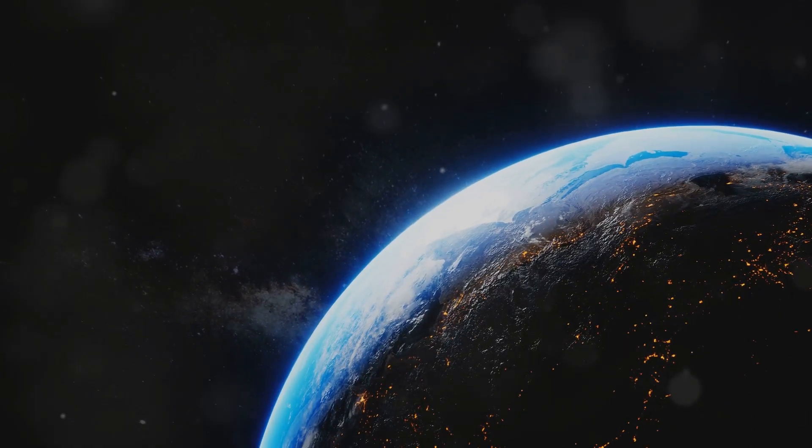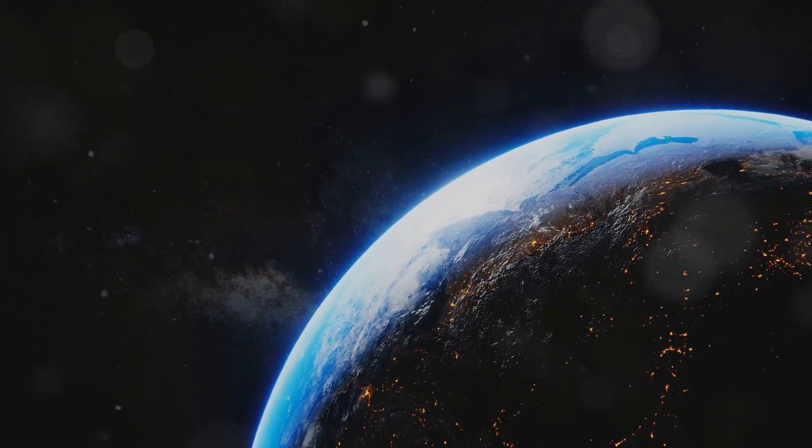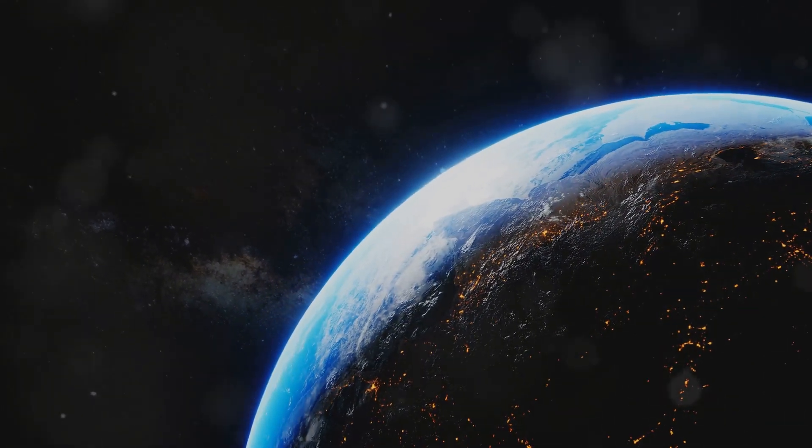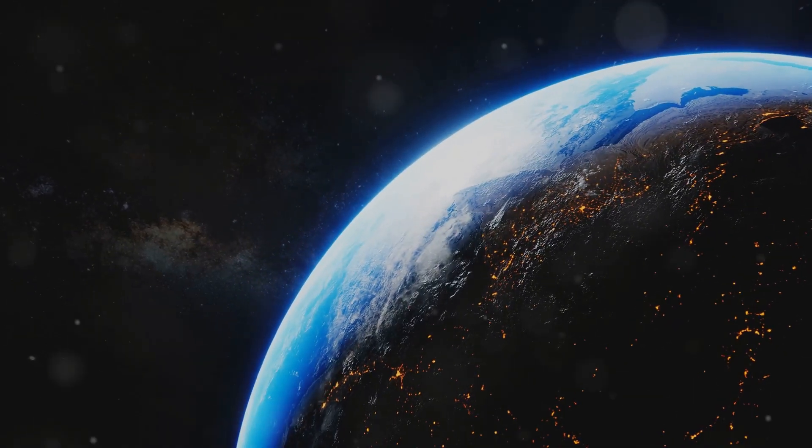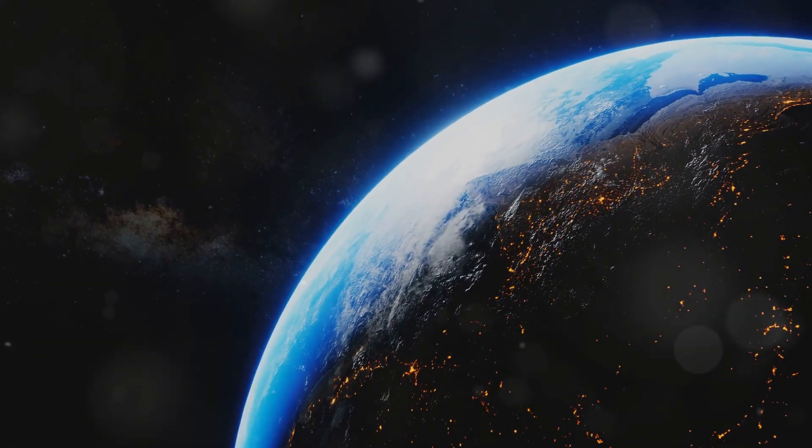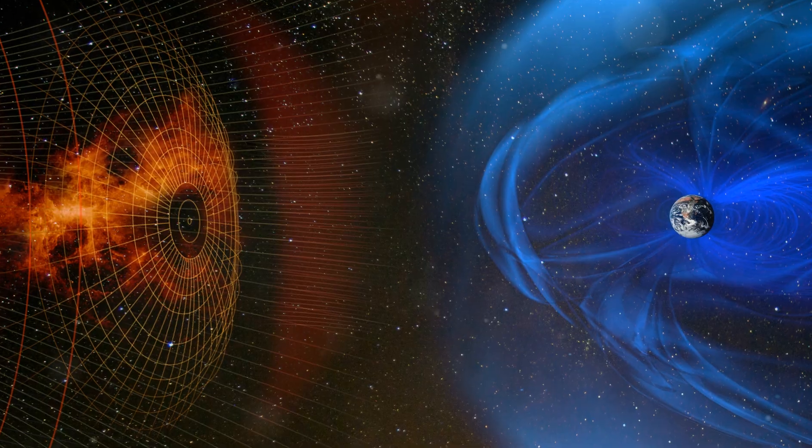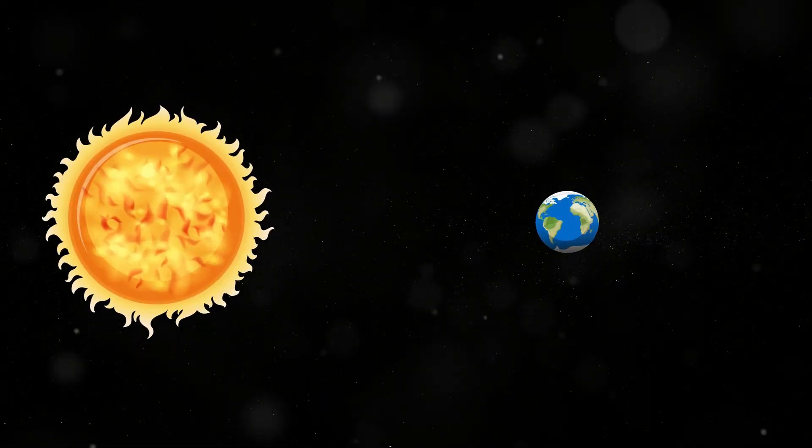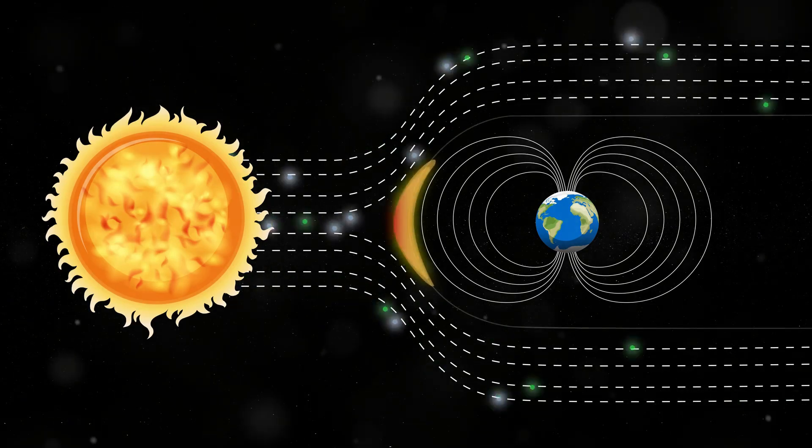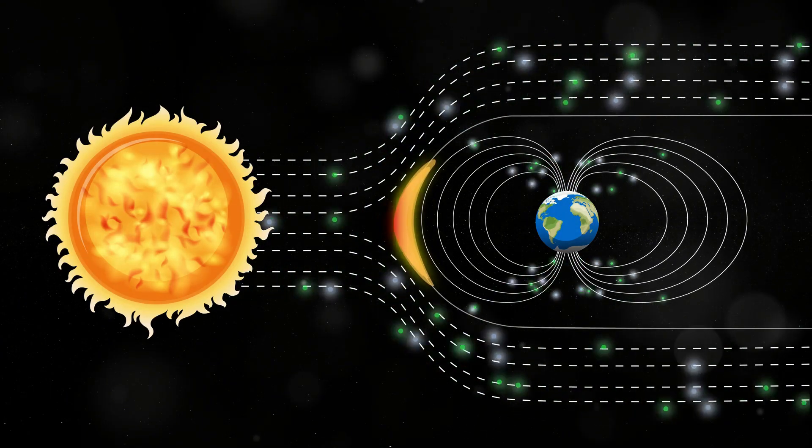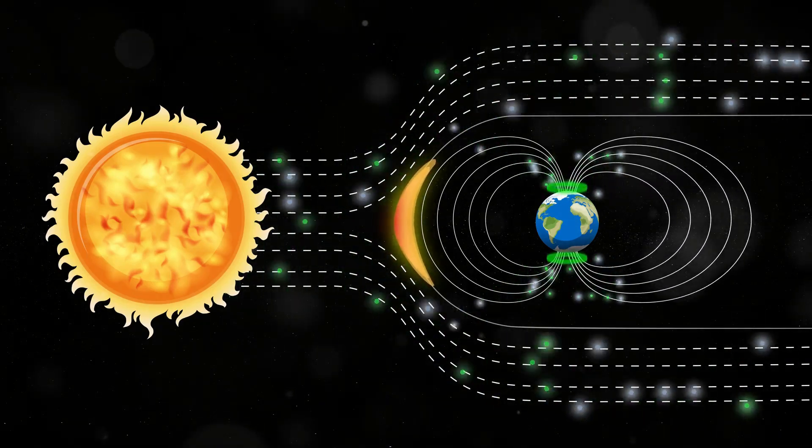Our atmosphere, a delicate balance of nitrogen, oxygen and other gases, provides us with the air we breathe and protects us from harmful radiation. The ozone layer, for instance, shields us from the sun's ultraviolet rays, which can be detrimental to life. Earth's magnetic field acts as a shield against the sun's solar wind, preventing it from stripping away our atmosphere. This magnetic field is generated by the movement of molten iron within the Earth's core, creating a protective bubble around our planet.